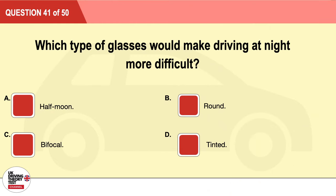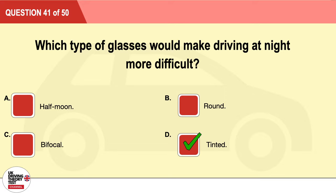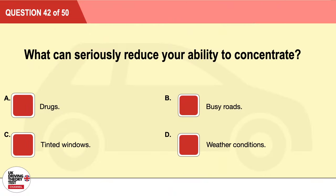Question 41: Which type of glasses would make driving at night more difficult? A: Half moon. B: Round. C: Bifocal. D: Tinted. The correct answer is D: tinted.